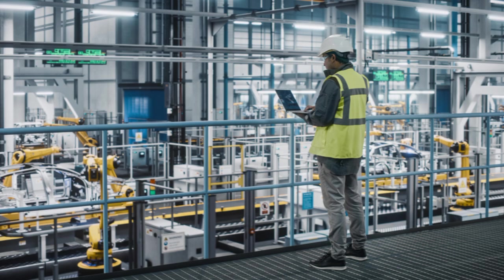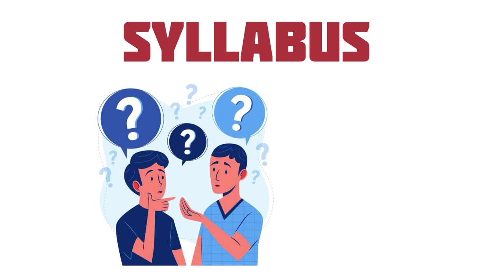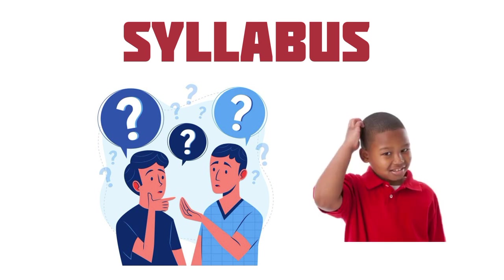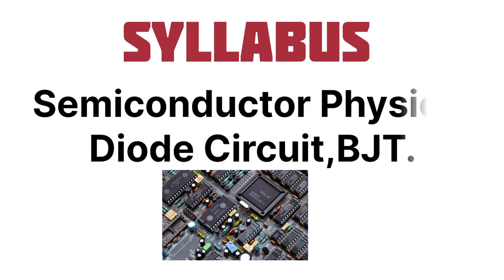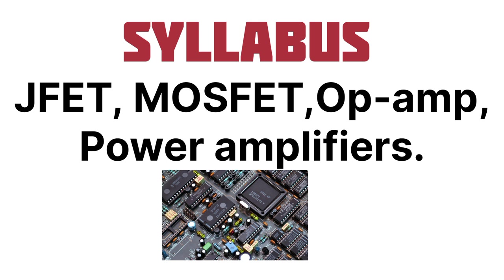Now let's talk about the complete syllabus of analog electronics — what we have to study. In analog electronics, we will first cover semiconductor physics, then move towards diode circuits, and then we will learn about the BJT, that is the bipolar junction transistor. So semiconductor physics, diode circuits, and complete information about BJT are the first topics we have to study.